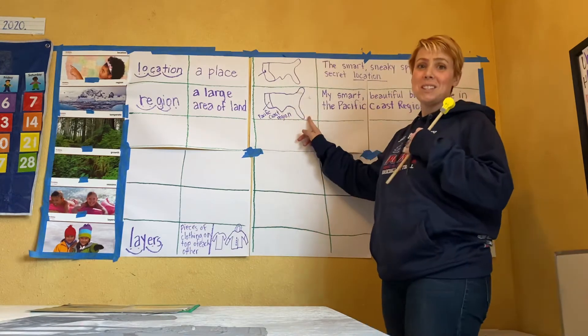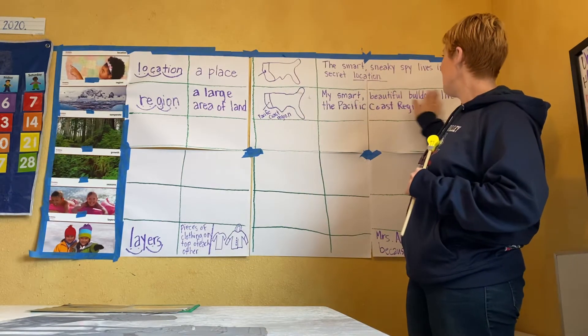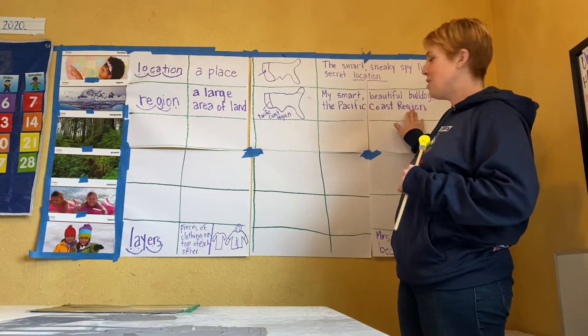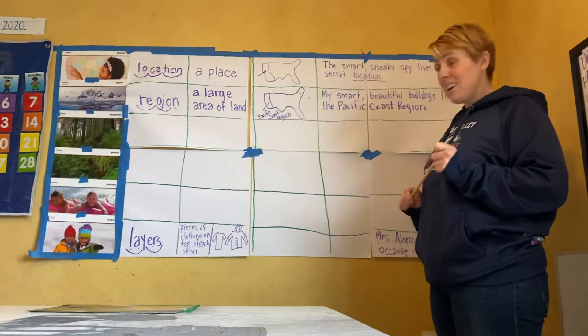And we said region is a large area of land and that we all live in the Pacific Coast region. And I wrote a sentence that said, my smart, beautiful bulldogs live in the Pacific Coast region. Let's all sing it. Okay. Can you help me? Yep. Reese, can you help me sing? Ready?